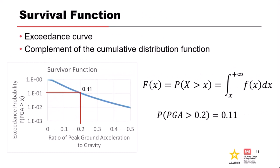Hazard curves are typically portrayed as survival functions — in the Corps of Engineers we call them exceedance curves or flood/seismic hazard curves. A survival function is the complement of the CDF: you compute it as 1 minus the CDF, or by integrating the density function from x to plus infinity. For example, the probability of PGA greater than 0.2 can be read directly from this plot as 0.11.